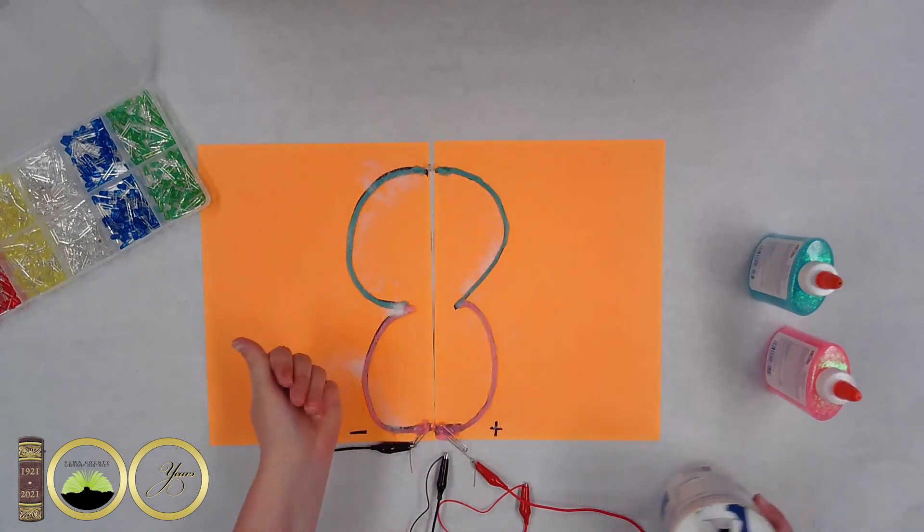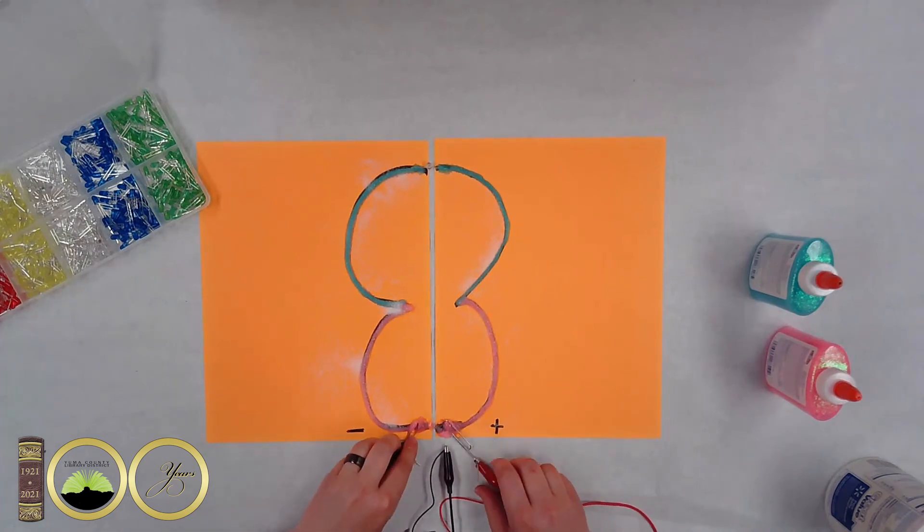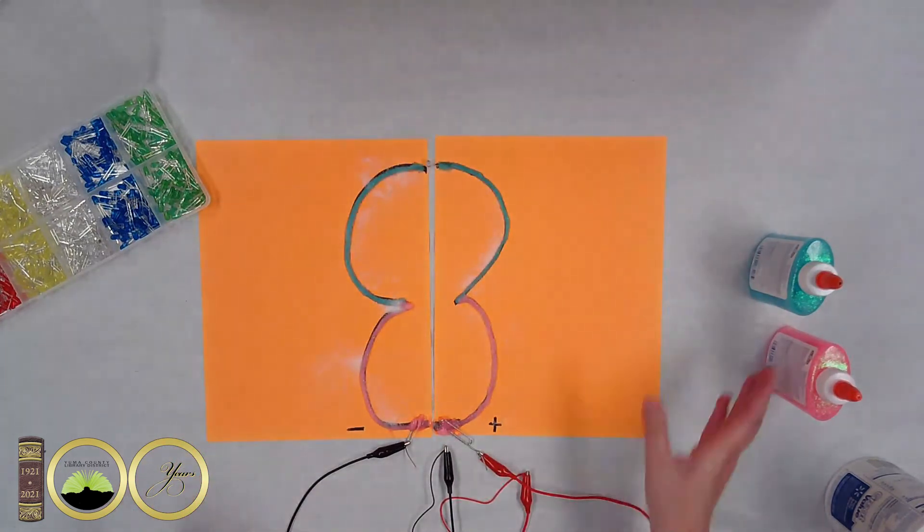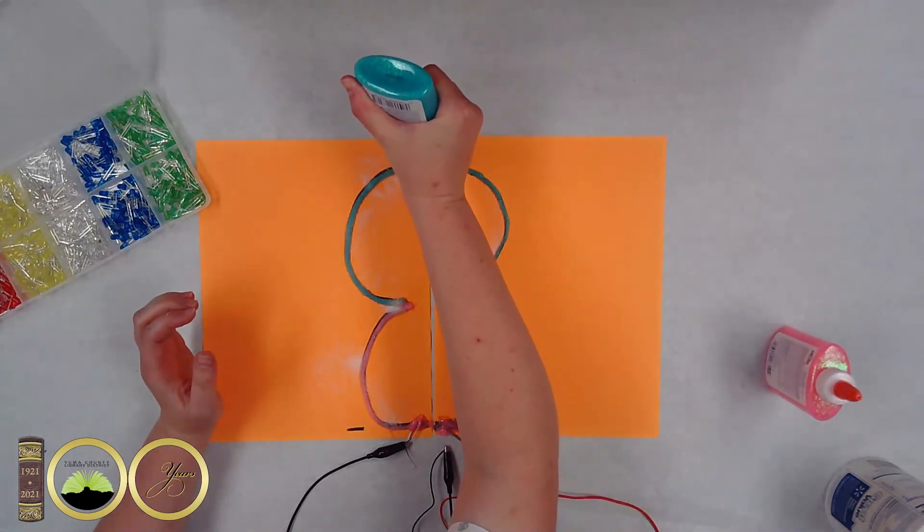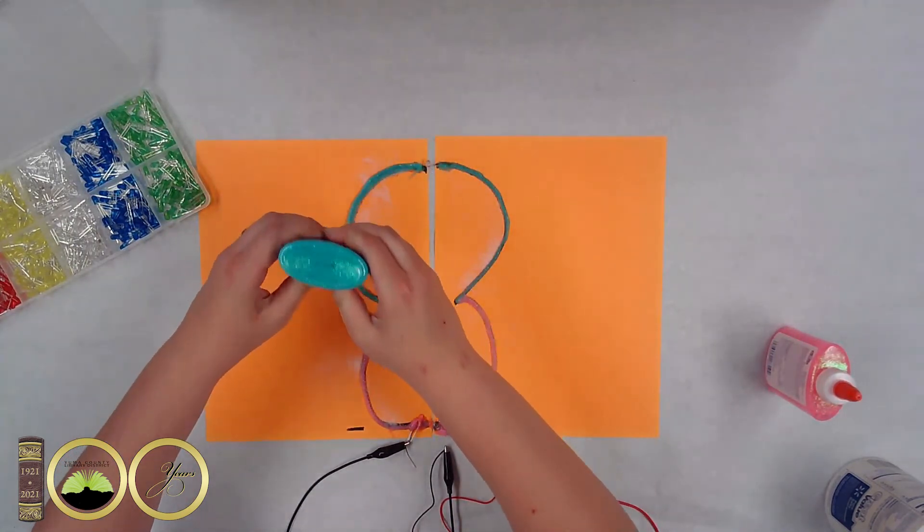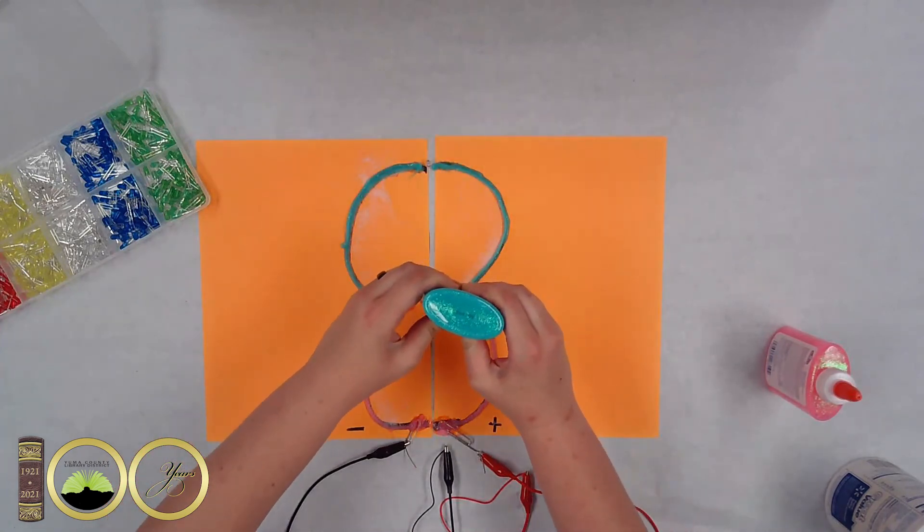If after that it hasn't lit up you can go ahead and check your alligator clips to make sure they're on correctly. Check your pins on the LED light make sure that they're fully in the glue. Make sure you have your LED light in correctly. The positive side touching the positive and the negative touching the negative. Or the room may be too bright. You may not notice that your light is lighting up because the room is too bright so you can try turning off the lights as well.